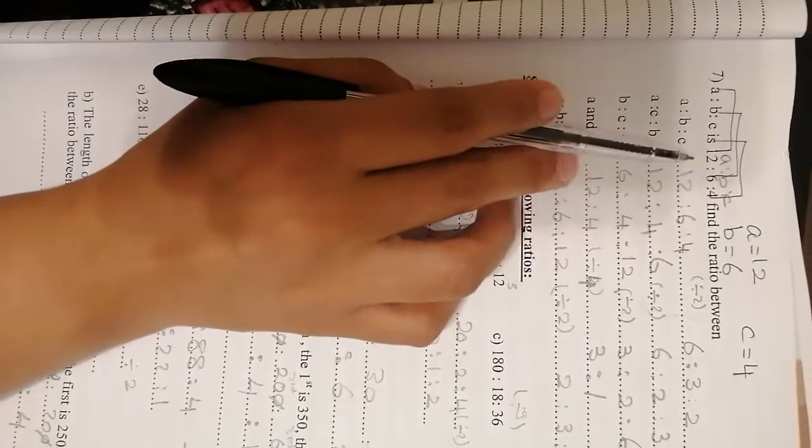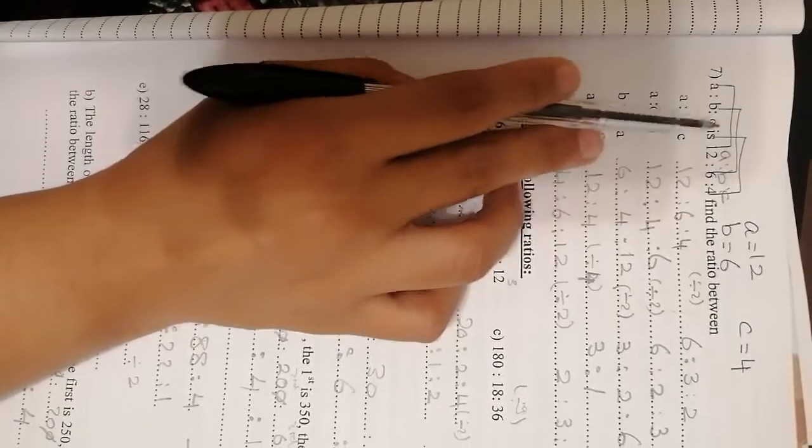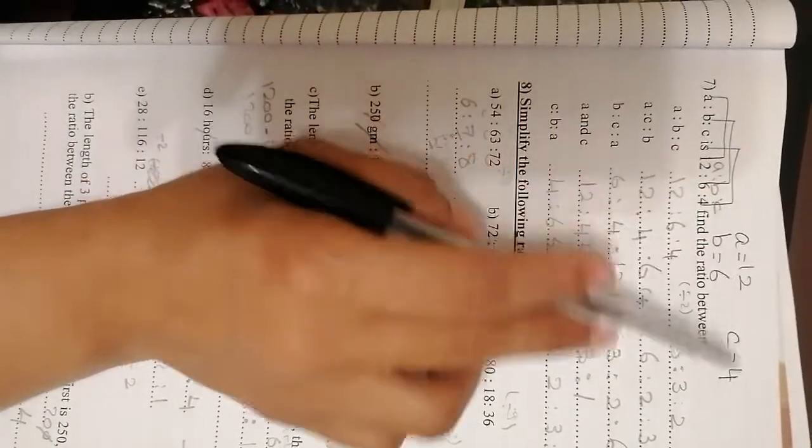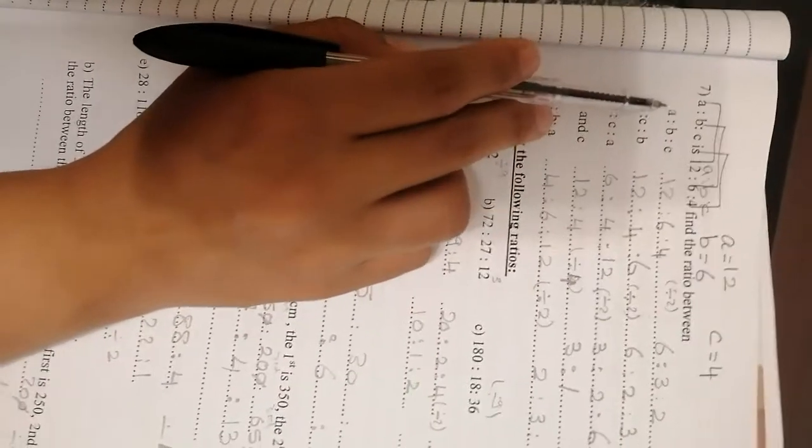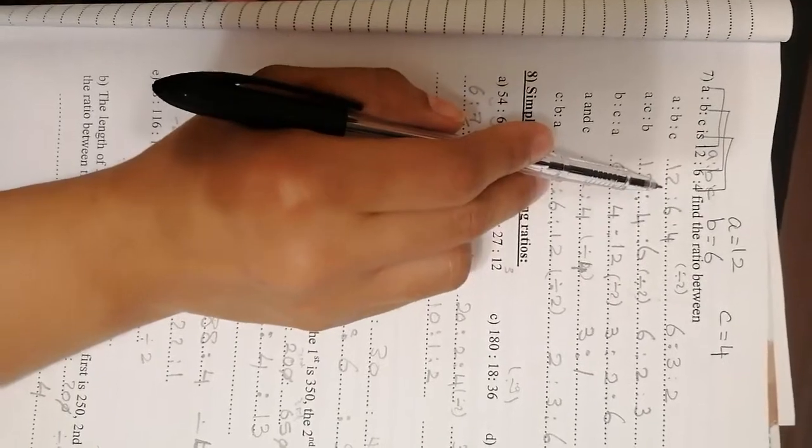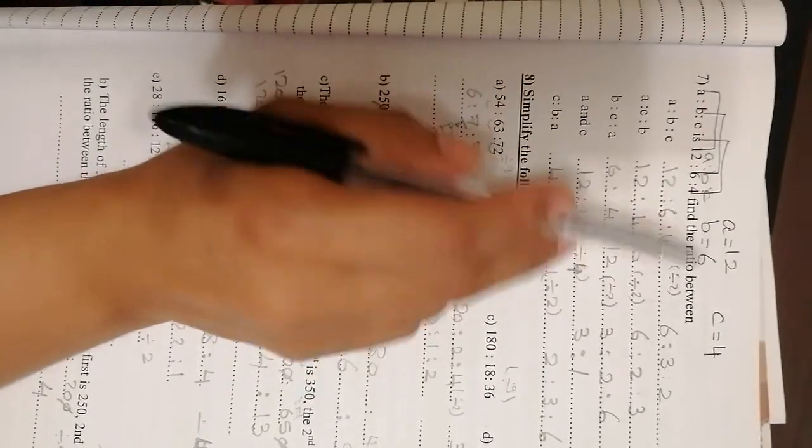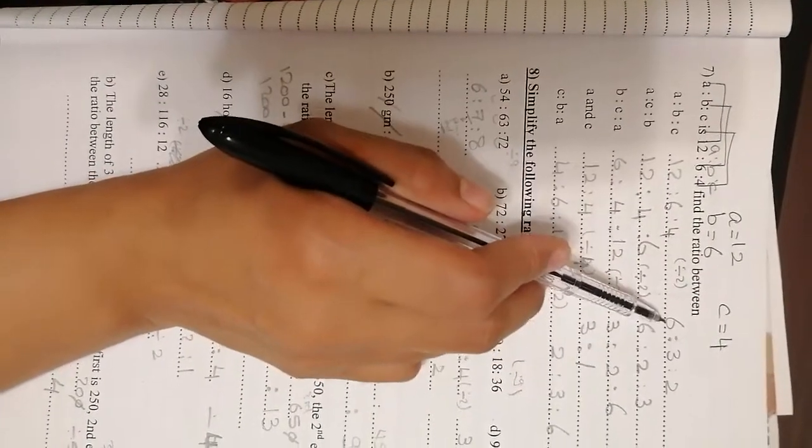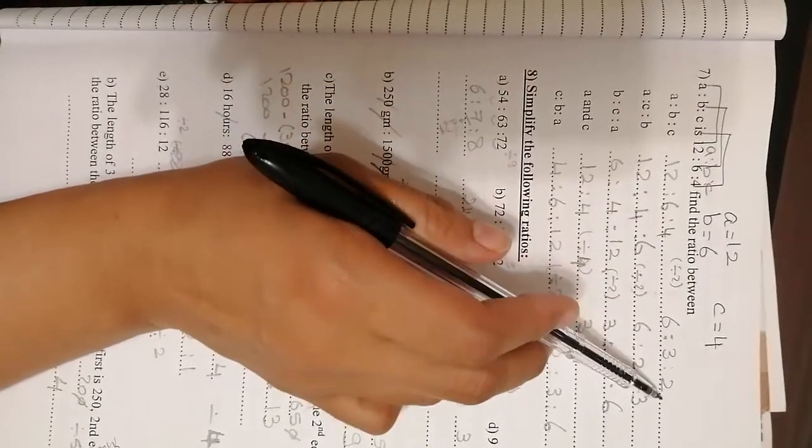That means that A is 12 and B is 6 and C is 4. You should write them. Then let's read first. You want A to B to C, 12 to 6 to 4. The 3 numbers are divisible by 2, so we are going to make it divided by 2 on the calculator. The answer will be 6 to 3 to 2.